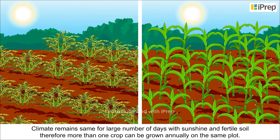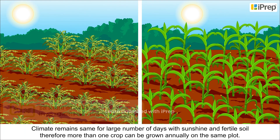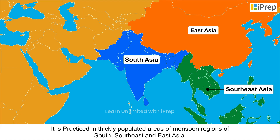The climate remains the same for a large number of days with sunshine and fertile soil. Therefore, more than one crop can be grown annually on the same plot. It is practised in thickly populated areas of monsoon regions of South, Southeast and East Asia.